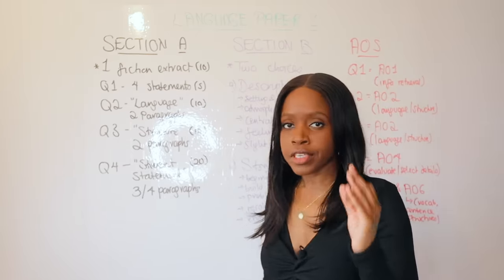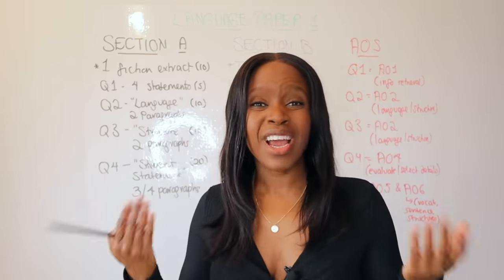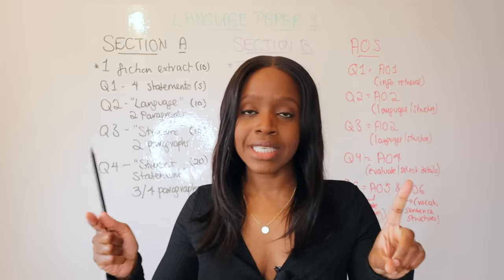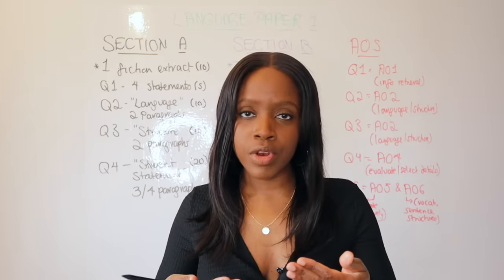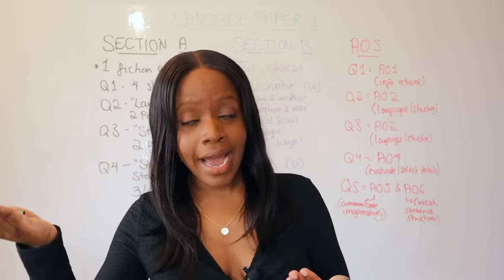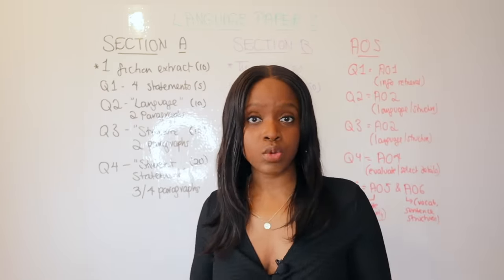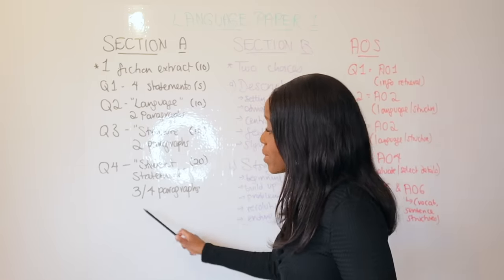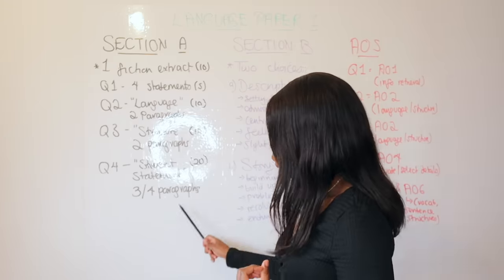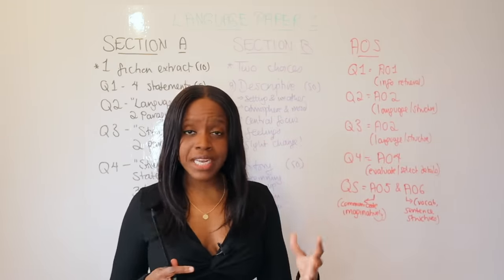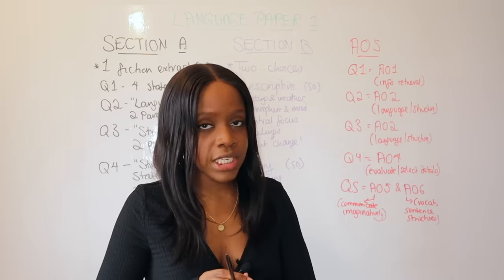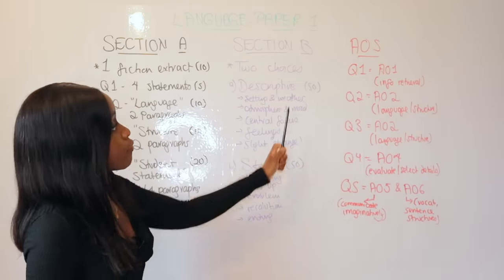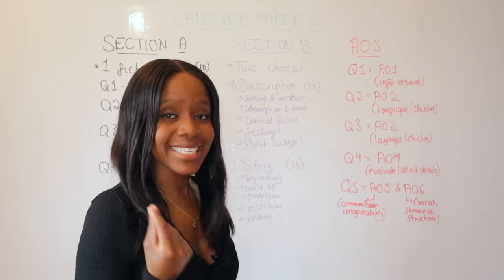Question 4, the final question in Section A, always gives you a student statement and asks to what extent you agree. I usually suggest agreeing and showing how the writer successfully illustrates the statement, because the student statement typically doesn't contradict what's going on in the extract. Use examples of both language and structure to support your agreement. This question is worth 20 marks so spend roughly 20 minutes on it and aim to write at least three PEEL paragraphs - four if you're speedy, at around five minutes per paragraph.